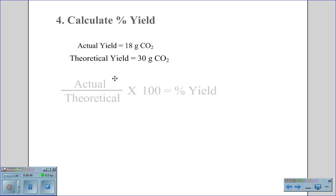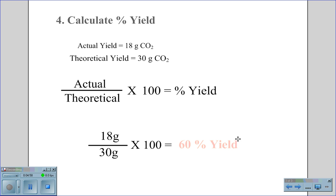Our equation for percent yield is actual divided by theoretical times 100 equals percent yield. Our equation becomes 18 grams divided by 30 grams times 100, which comes out to be a percent yield of 60%.